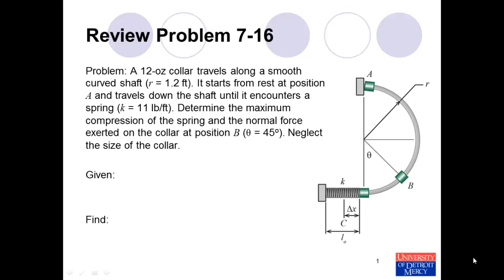This example is from the text Conceptual Dynamics, specifically review problem 7-16. The problem statement reads: a 12-ounce collar travels along a smooth curved shaft with radius R equals 1.2 feet. It starts from rest at position A and travels down the shaft until it encounters a spring with spring constant 11 pounds per foot. Determine the maximum compression of the spring and the normal force exerted on the collar at position B. Neglect the size of the collar.